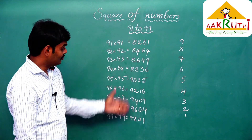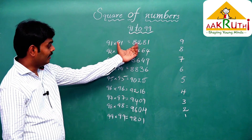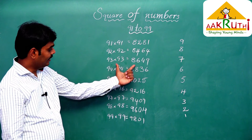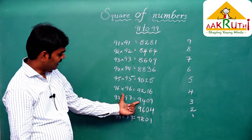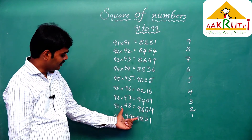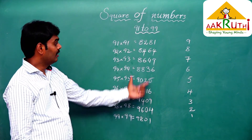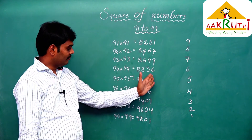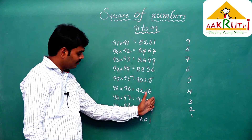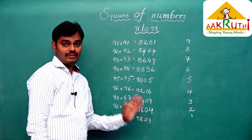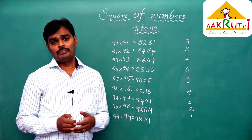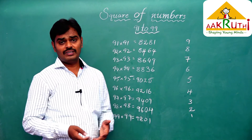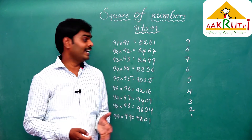Here we can observe the sequence: the first parts are 82, 84, 86, 88, 90, 92, 94, 96, 98. And the second parts are 9 squared, 8 squared, 7 squared, 6 squared, 5 squared, 4 squared, 3 squared, 2 squared, and 1 squared. With regular practice we can find the square of these numbers in our mind itself.